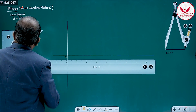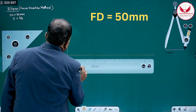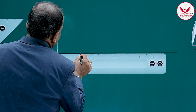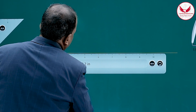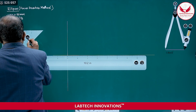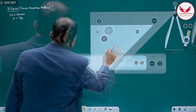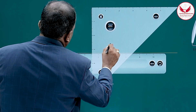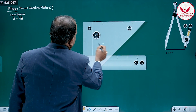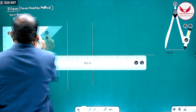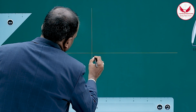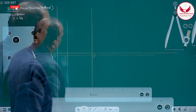We have to mark the focus at a distance of 50 mm from the directrix. Mark it as 10, 20, 30, 40, and 50. At this 50 mm mark, draw a vertical line. The intersection of the axis and this vertical line is the focus.